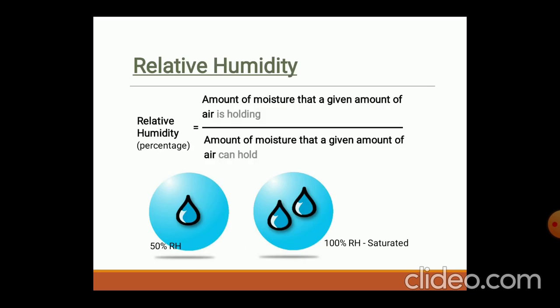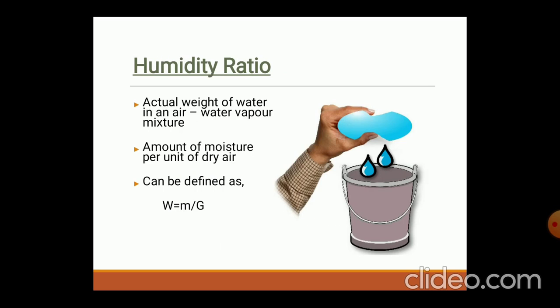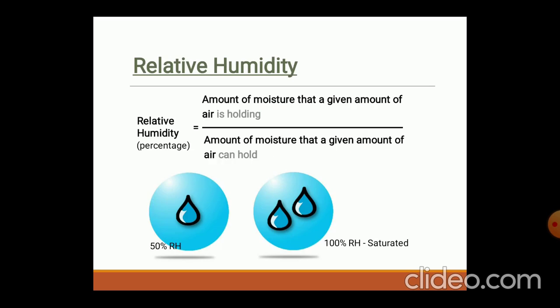The second point is relative humidity. Relative humidity is the ratio of the amount of moisture that a given amount of air is holding to the amount of moisture that given amount of air can hold.